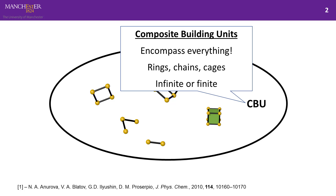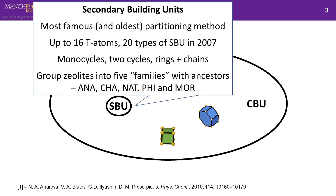From that zeolite paper there's a nice hierarchical diagram explaining all the different types of building units proposed for zeolites. Composite building units pretty much encompass everything, so they're too general — anything can be a composite building unit. Secondary building units are probably the most famous ones, but they're not general enough; you can't partition a structure generally using only secondary building units.